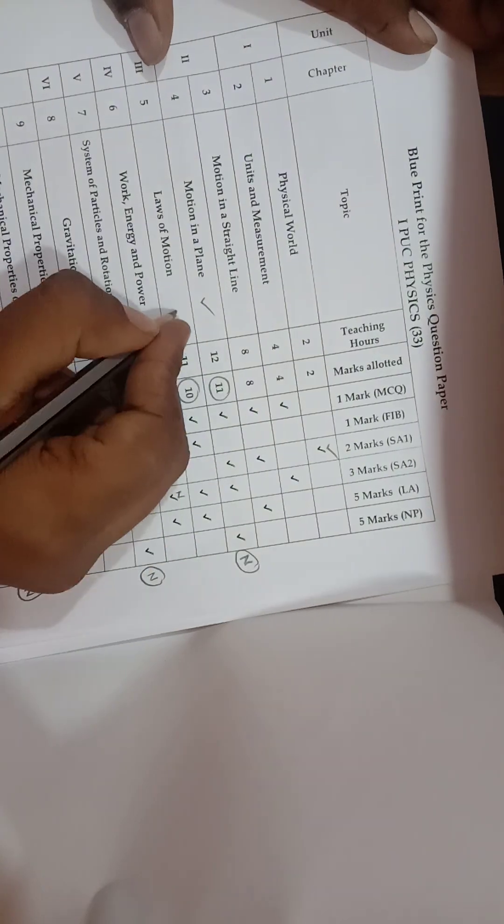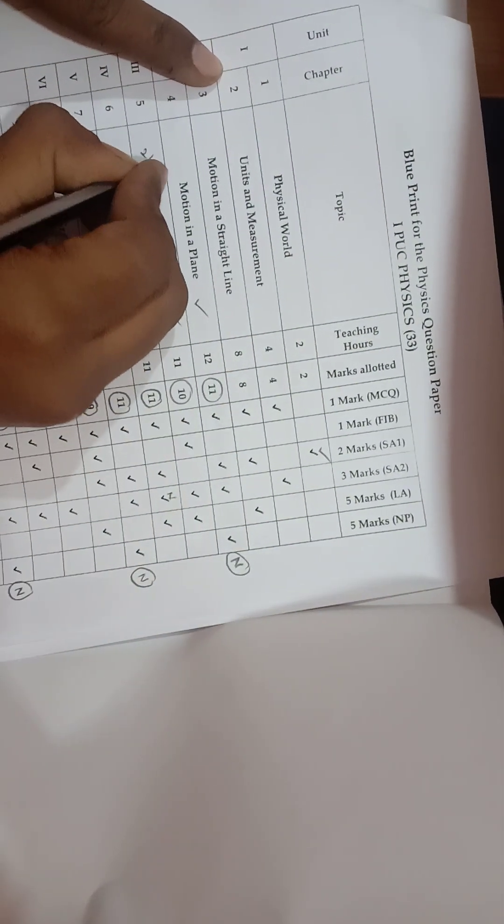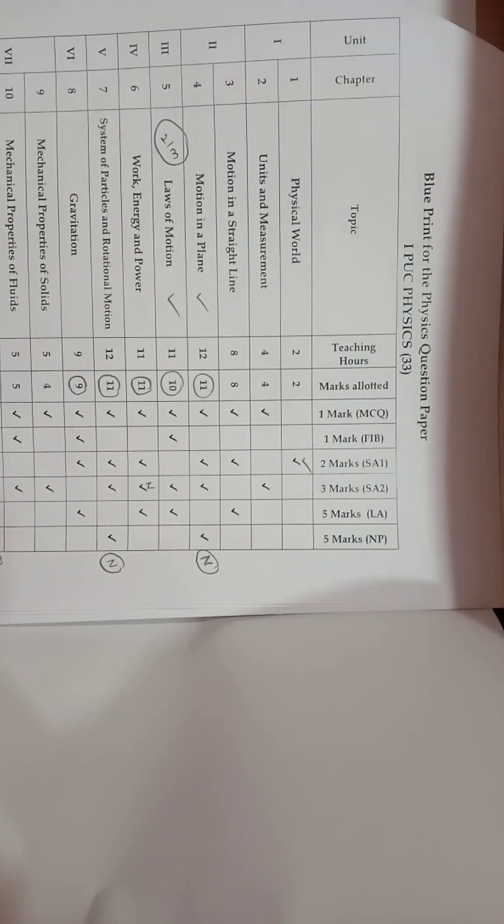For students targeting only the passing marks: focus on the highest-weightage and easiest chapters. Motion in a Plane carries 11 marks and is easy to study — target that first. Next, Laws of Motion — target that chapter too. If you study these two chapters perfectly, you will get 21 marks just from two chapters, which is enough to pass. I hope you have understood the paper analysis of physics.